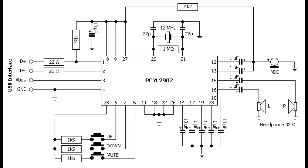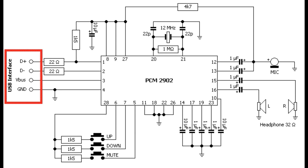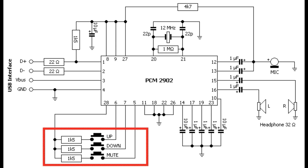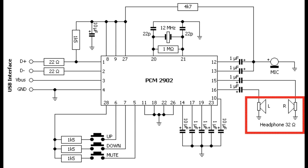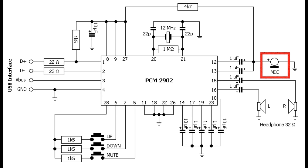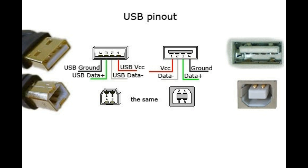Here is the schematic of the USB sound card you are going to need — PCM2902, a 16-bit USB audio codec integrated chip. These are the positions where you are going to put the USB jack for the connection; the buttons are optional. Here you are going to put the headphone jack or the speaker, and here the microphone jack. These are the USB pin-outs. Everything is included in the description.